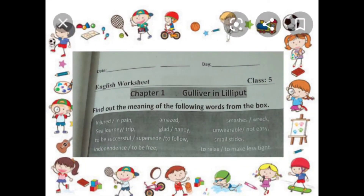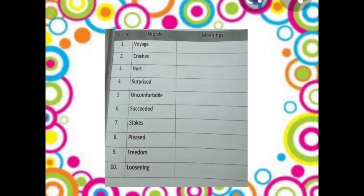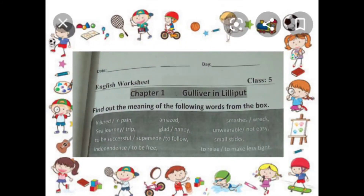Now on page number four, first of all mention the date. On this page we shall find out the meanings of the following words from the box. You have to find the meaning from this box. First let's see the meanings in Urdu.